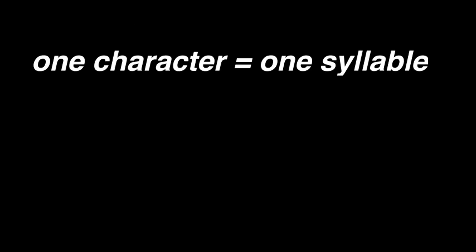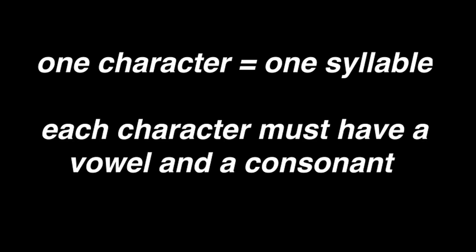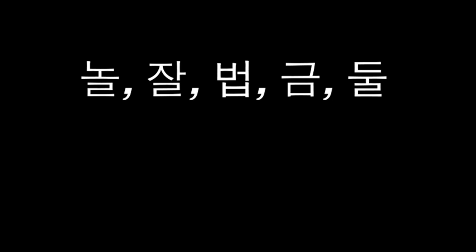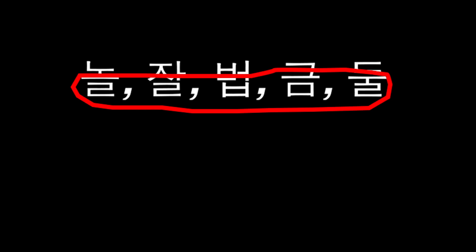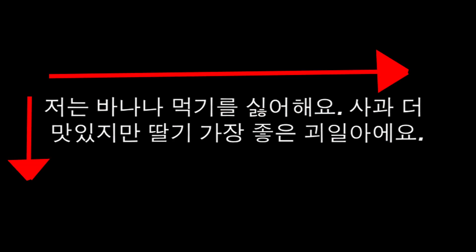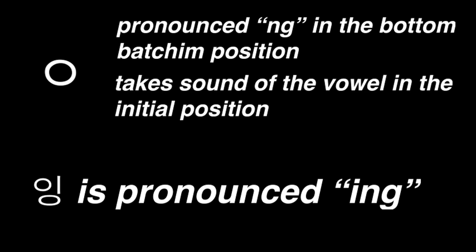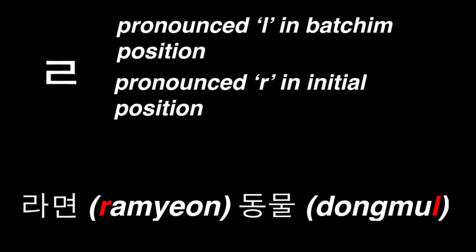The way Hangul works is that one character represents one syllable, and so each character must have at least one consonant and one vowel. Some characters have an additional consonant at the bottom, or batchim position, which shows the final consonant of the syllable. Each syllable block is written left to right and top to bottom. Some letters are pronounced differently in different positions — one character is pronounced as a velar nasal in the bottom position, but takes the sound of the vowel if it's in the initial position. Similarly, another character makes a tapped R sound in the initial position but makes more of an L sound in the bottom position.